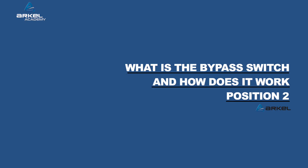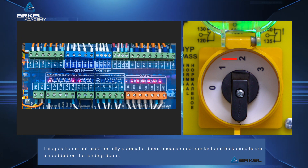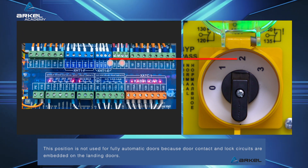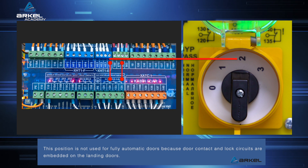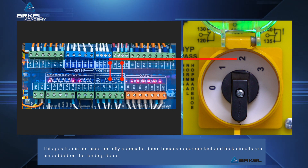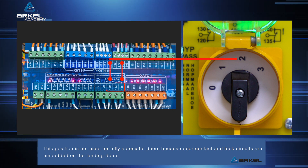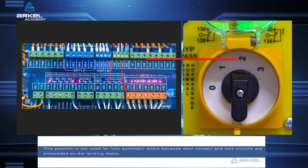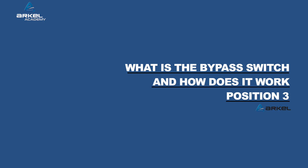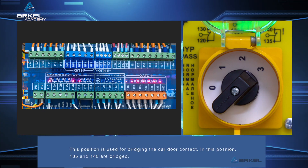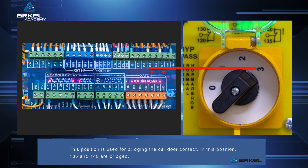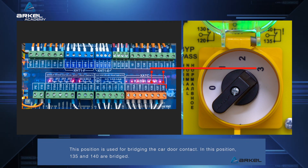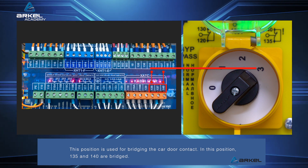Position 2: this position is used to bridge the retiring cam on the semi-automatic doors and the landing door lock safety circuit on the fully automatic doors. In this position, it is bridged between 130 and 135. Position 3: this position is used for bridging the car door contact. In this position, 135 and 140 are bridged.